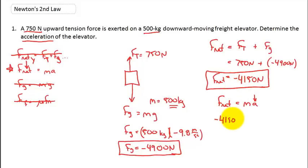Negative 4,150 Newtons is my net force, equals my mass of 500 kilograms multiplied by the acceleration of the object. And let's do a little bit of algebraic gymnastics here.